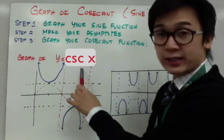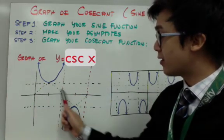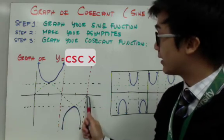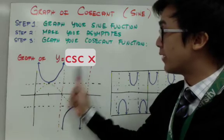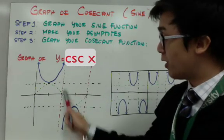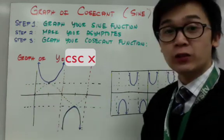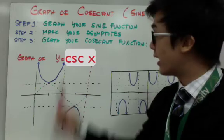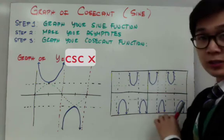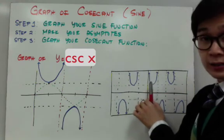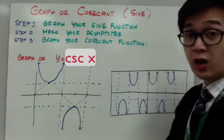This is the graph of y equals cosecant x. The dotted line in the middle is the graph of the sine function, and the behavior of the cosecant function behaves like this — you have your vertical asymptotes for one period of cosecant x. If you use your graphing calculator to find the graph of y equals cosecant x, it will show a graph similar to this one. This is periodic, just like the sine and cosine graphs, because all trig functions are periodic.